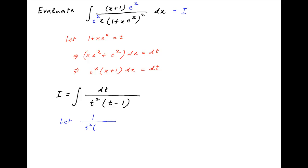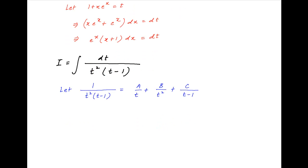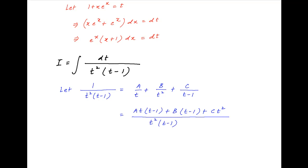Now let 1 upon t square times t minus 1 be equal to a upon t plus b upon t square plus c upon t minus 1, where a, b, and c are constants to be determined. The right-hand side can be written as a times t times t minus 1 plus b times t minus 1 plus c times t square, all divided by t square times t minus 1.